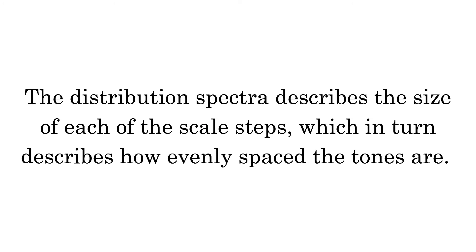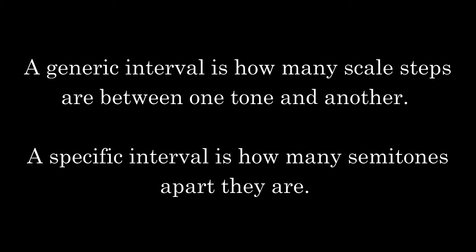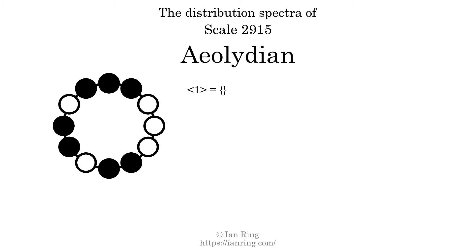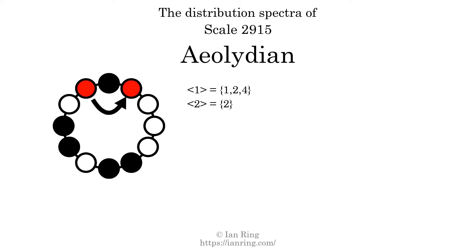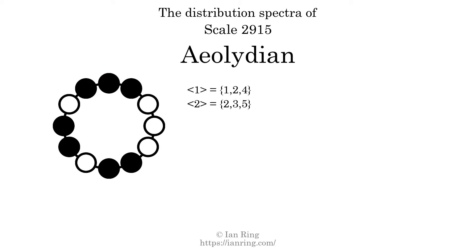The distribution spectra describes the size of each of the scale steps, which in turn describes how evenly spaced the tones are. A generic interval is how many scale steps are between one tone and another. A specific interval is how many semitones apart they are. The generic interval of one scale step comes in three different specific interval sizes: one semitone, two semitones, and four semitones. The spectrum width of this generic interval is the highest, four, minus the lowest, one, which equals three. The generic interval of two scale steps comes in three different specific interval sizes: two semitones, three semitones, and five semitones. The spectrum width of this generic interval is three.